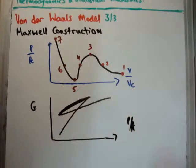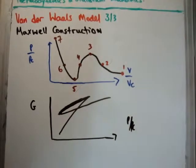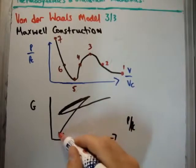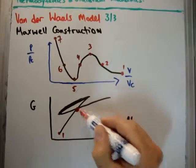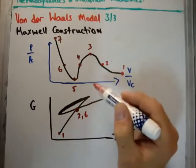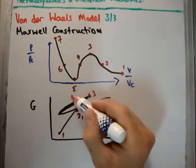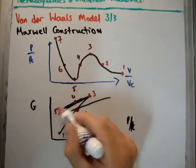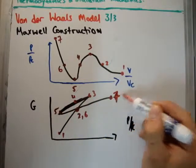And if we use the same numbering system that I did up here, we'll get the following. We'll get, there's point one, we have points two and six, point three, point four, point five, and point seven.